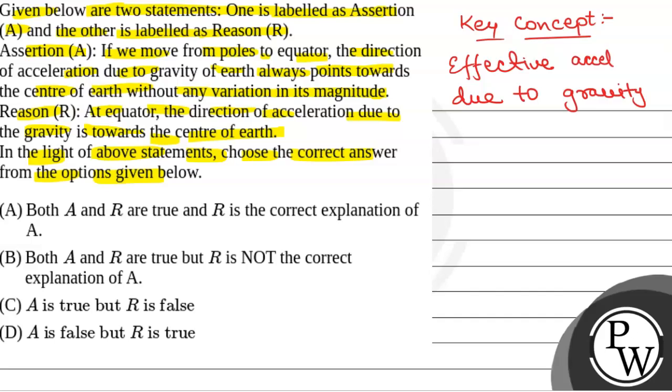This is effective acceleration due to gravity, which is also known as G-effective. That is a resultant of G and omega square R, where R is the radius of earth and omega is the angular velocity of rotation of earth.